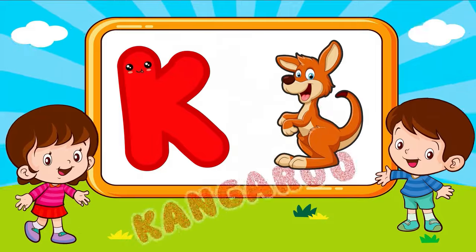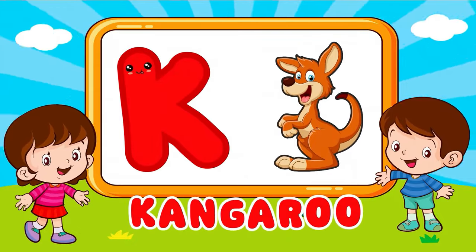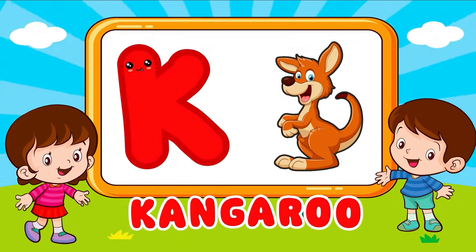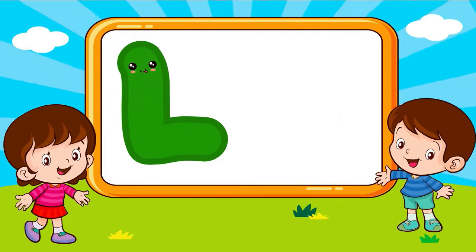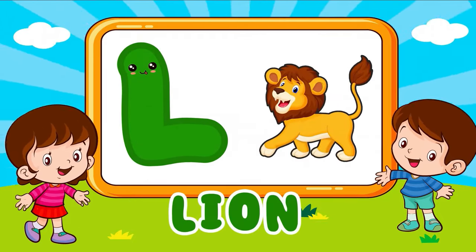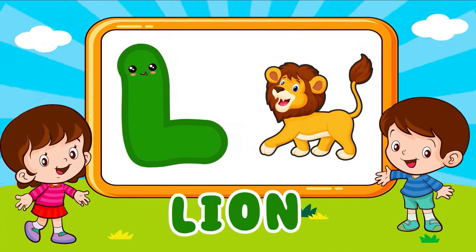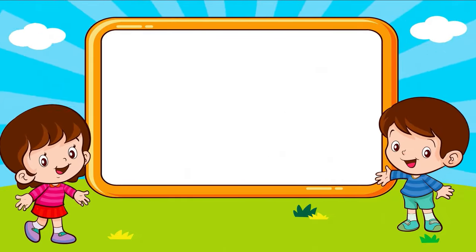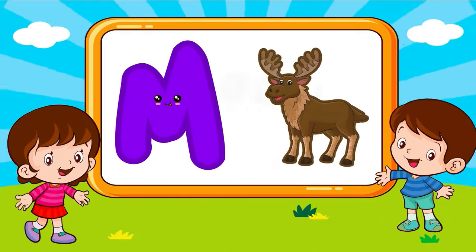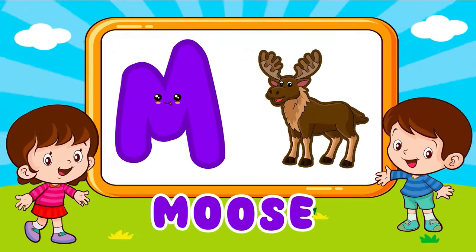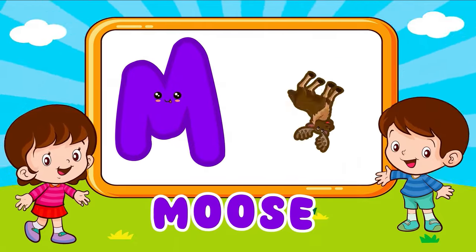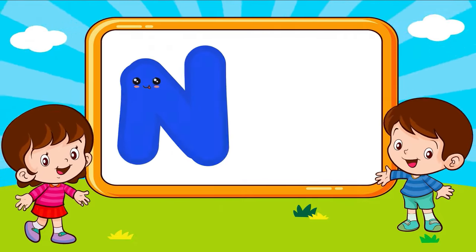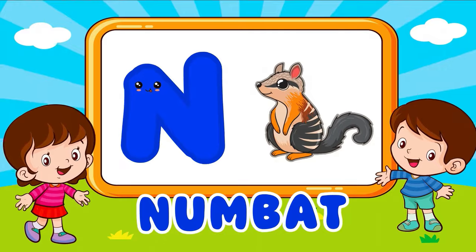K is for kangaroo. K, K, kangaroo, K is for kangaroo. K, K. L is for lion. L, lion, L is for lion. L, L. M is for moose. M, moose, M is for moose. M, M.